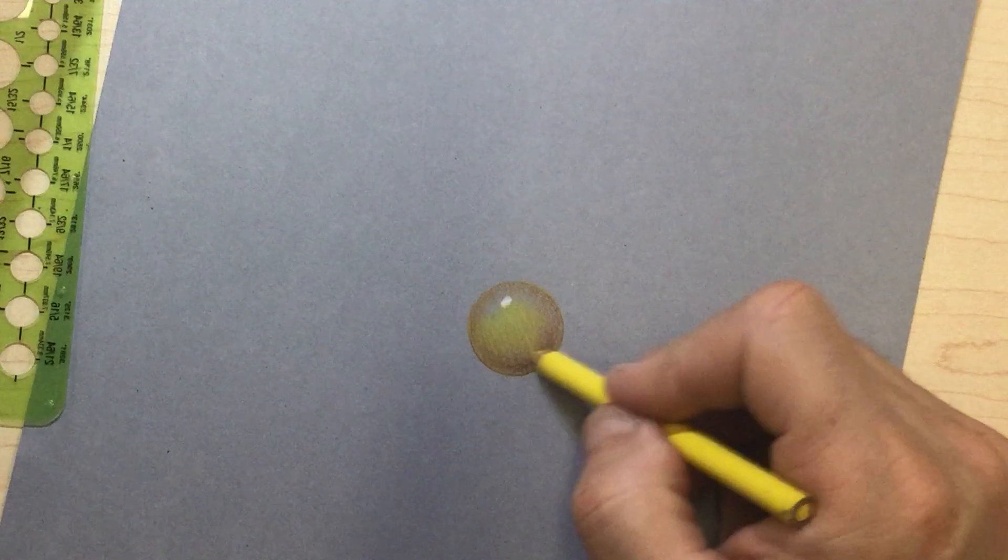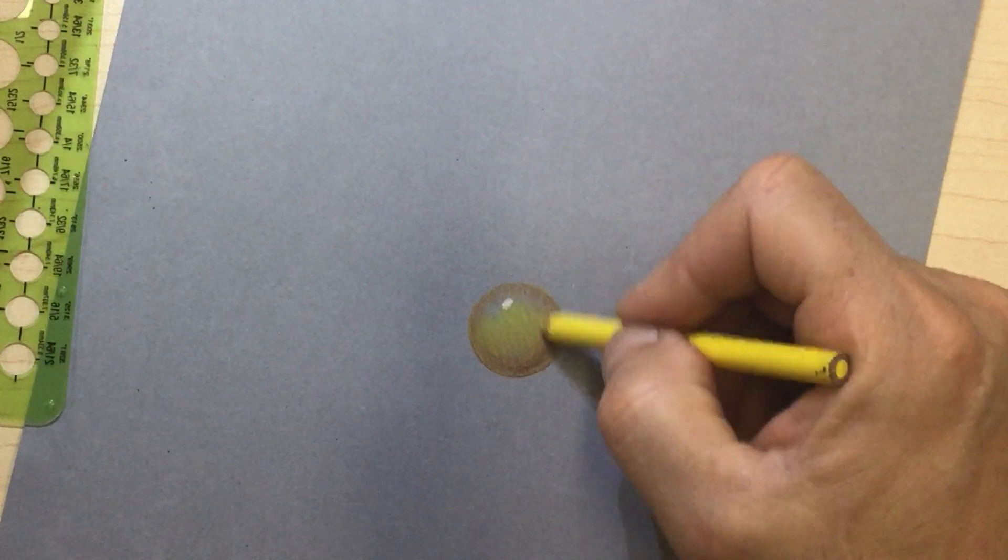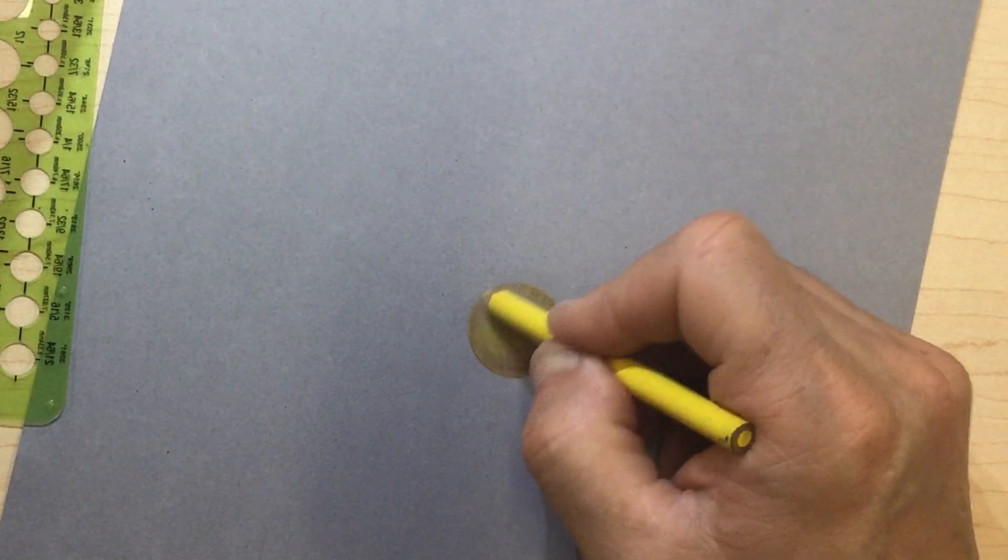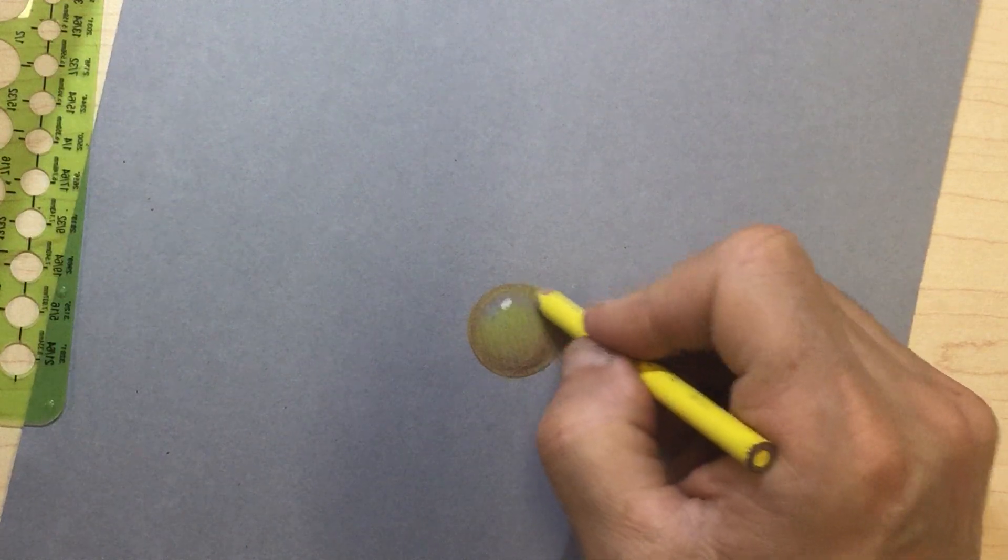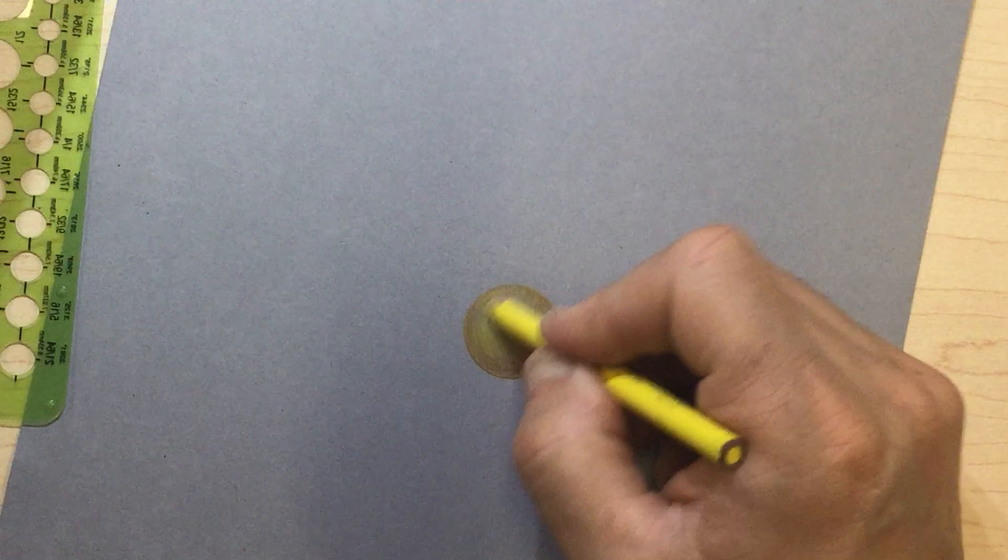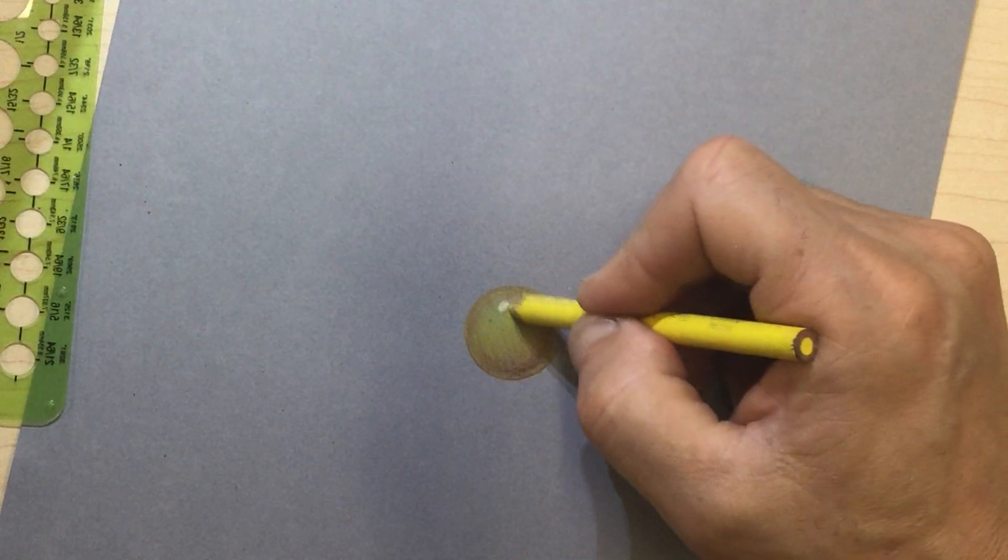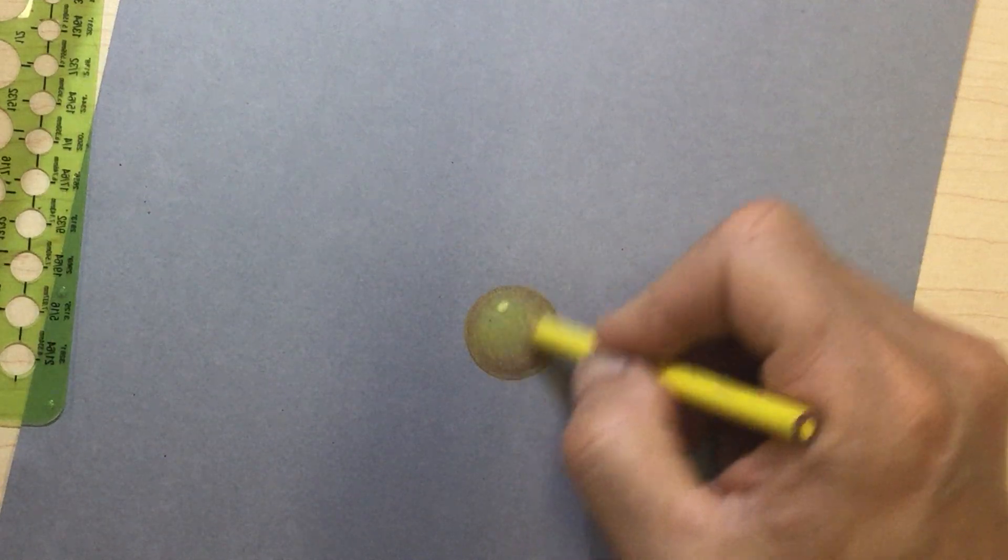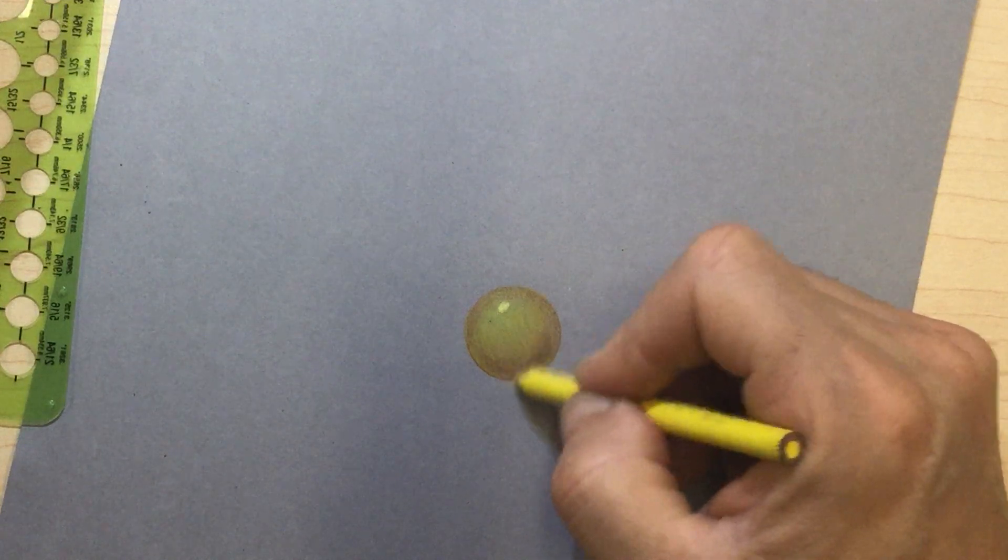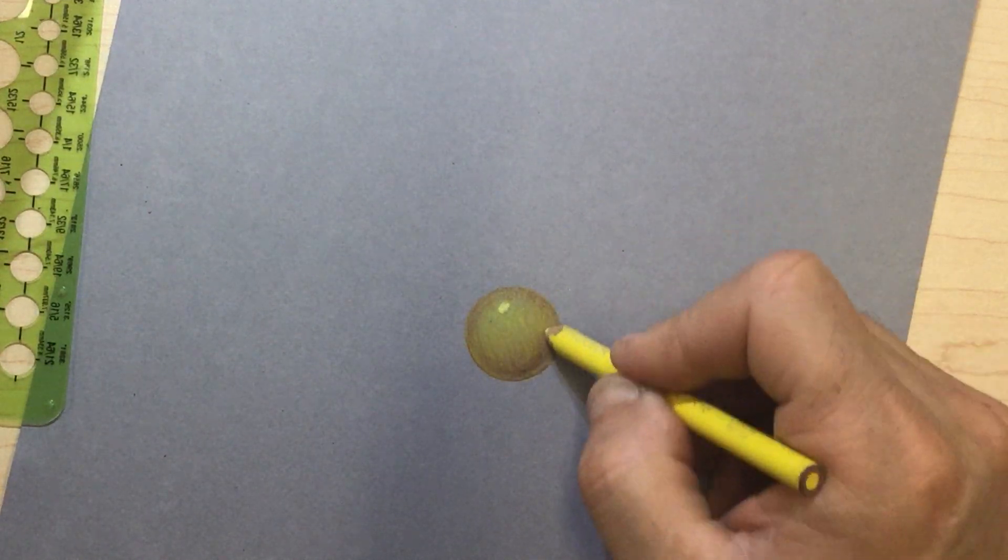So, I'm almost using the canary like a blending tool. Keep your edges crisp, and I'm going to go over my highlight, and then I'm going to reassert with my gouache. Not because I want to, but because I'm supposed to show you guys how to use gouache.